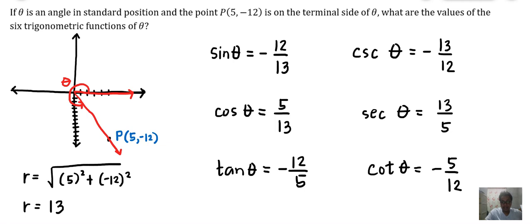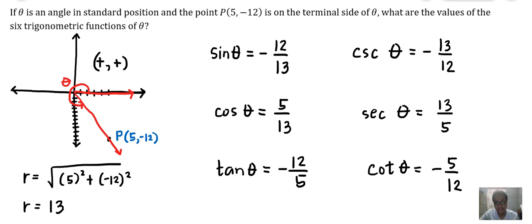If you look at the illustrations below this video, you will see a discussion on the signs of the trigonometric functions. The sign of the trigonometric function depends on the quadrant where the terminal side of the angle lies. In the first quadrant, the coordinates X and Y are both positive, meaning sine and cosine of theta will be positive, and in return, tangent of theta will also be positive. Remember, the sign of sine is the same as the sign of cosecant because they are reciprocals. The same is true with cosine and secant.